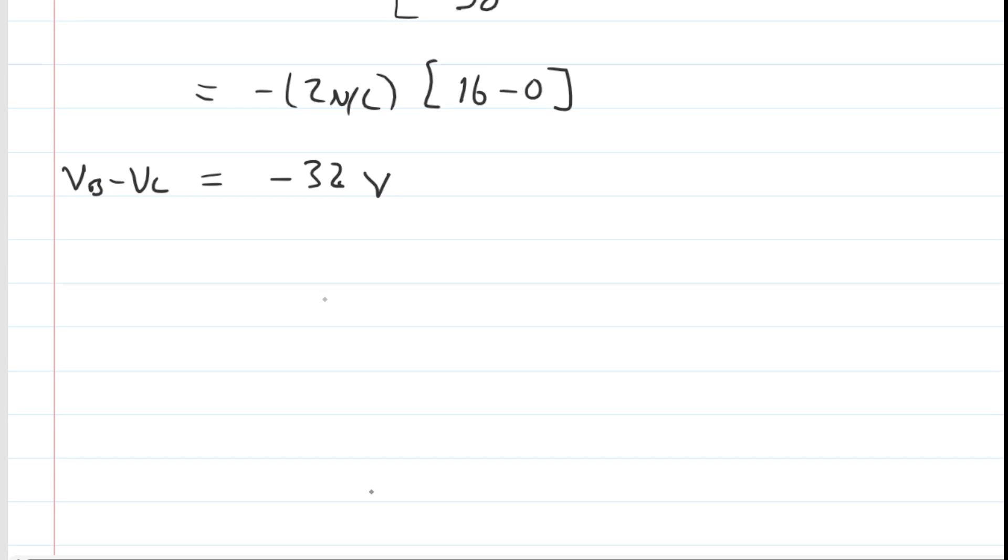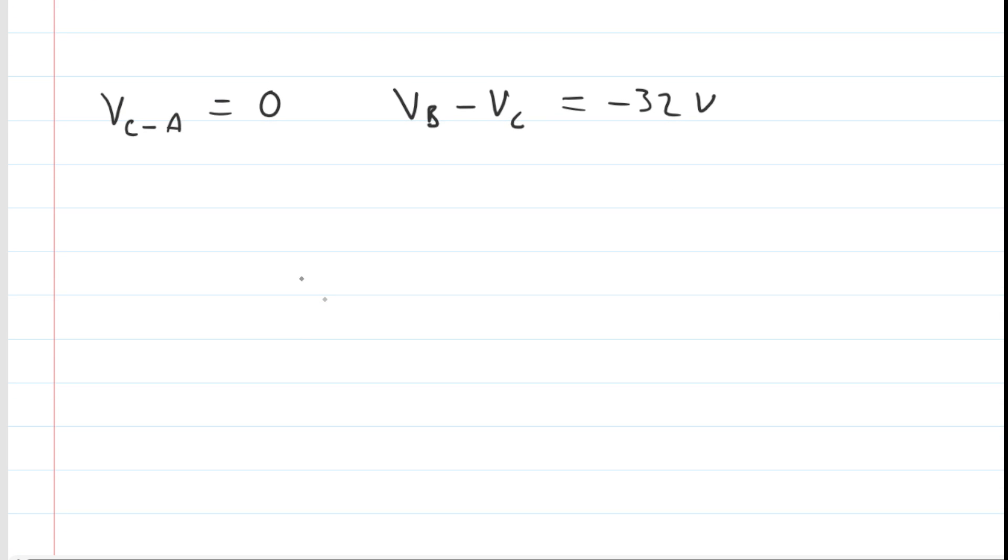So now let's take stock of what we have. We said that the potential difference when we went from A to C was zero, and then we just figured out the potential difference from C to B was negative 32. So what's the overall change in potential? Remember, we're trying to find V_B minus V_A. We claim that the path didn't matter.